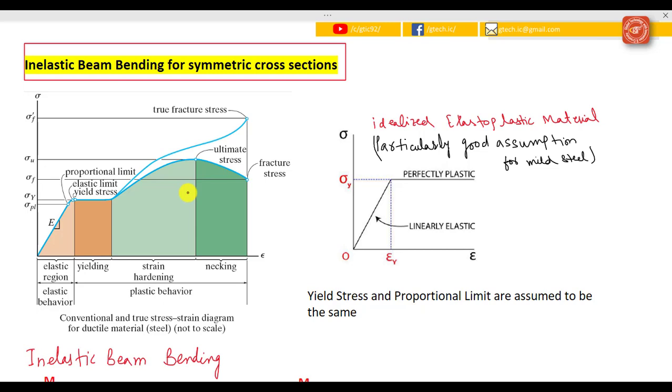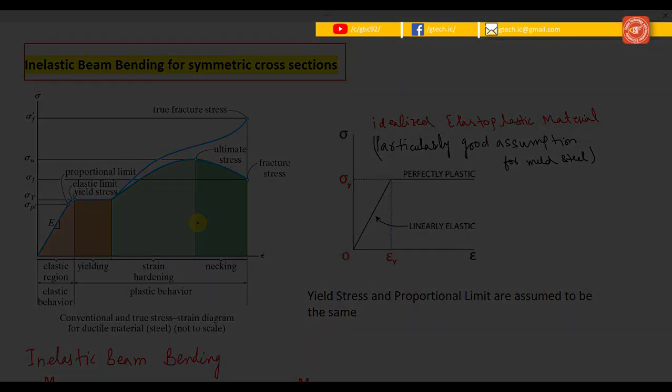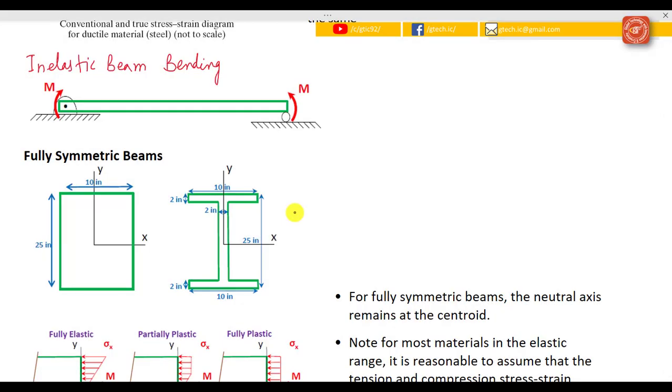The yield stress and the proportional limits are assumed to be the same, so we directly go from linearly elastic region to perfectly plastic region. For symmetric beams we have symmetry about the x-axis and the y-axis. Here will be our fully elastic situation and we have not yet reached an inelastic condition.